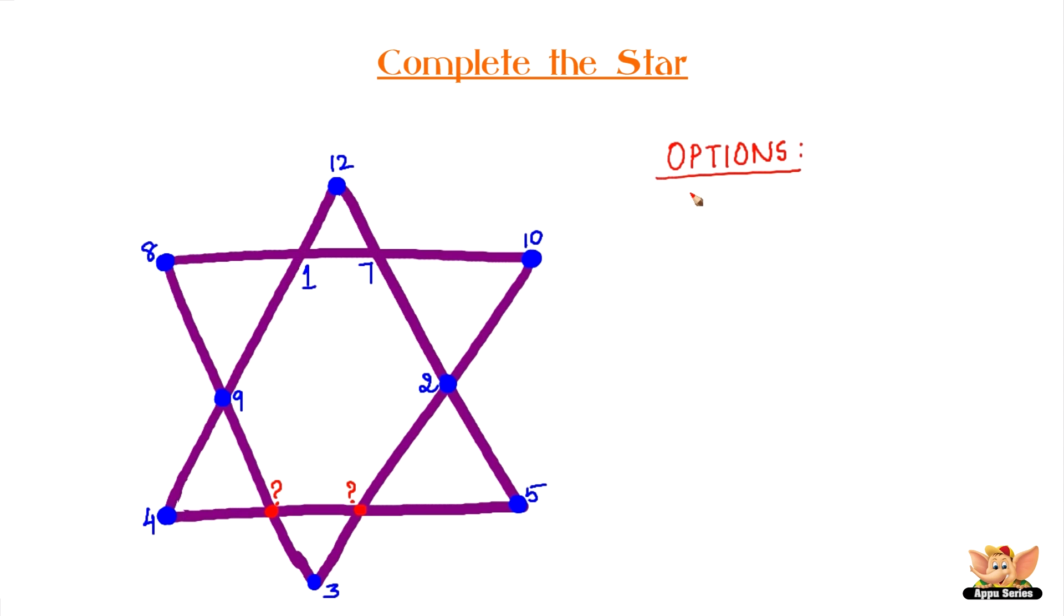Your options are A: 6 and 11, B: 9 and 13, C: 4 and 8, D: 13 and 15. Can you figure it out? The clock is ticking.